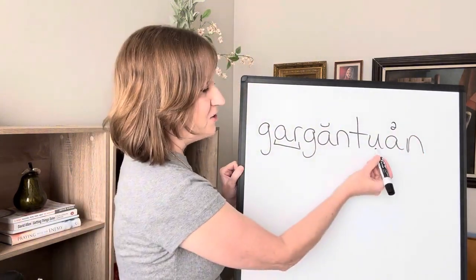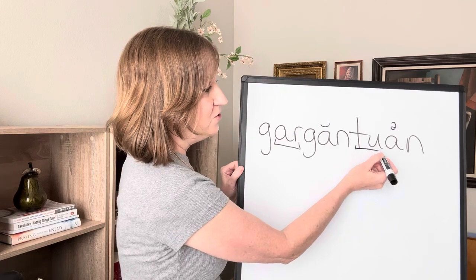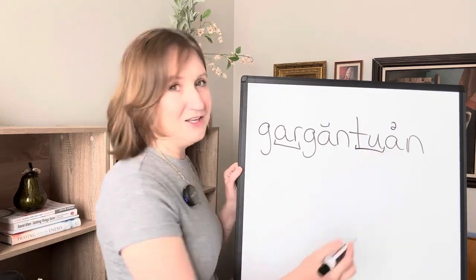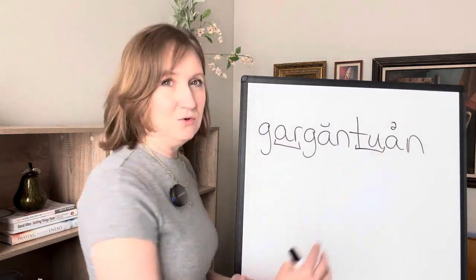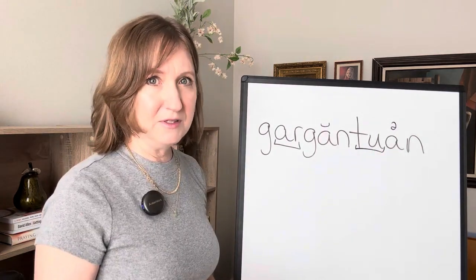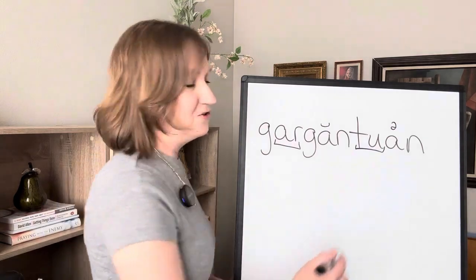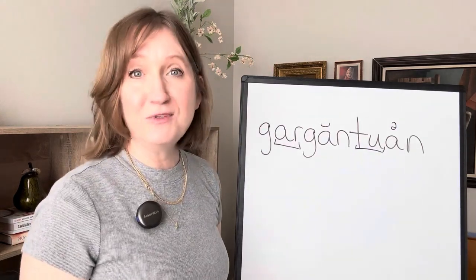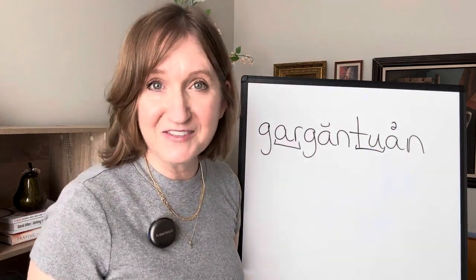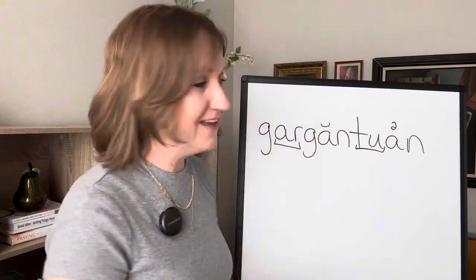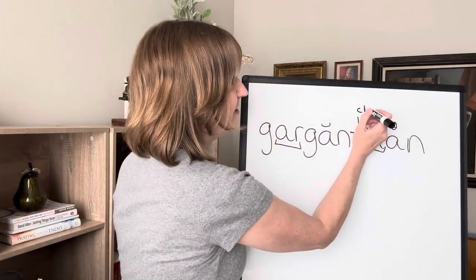Now back to this U. I want you to look at this T-U as a unit. When you see T-U toward the end of a multi-syllable word and there's a vowel after it, that T-U will say 'CHU'. Isn't that the funnest fact you've heard all day? So this is going to sound like 'CHU'.